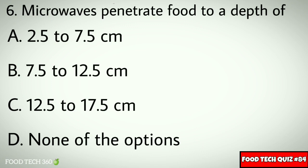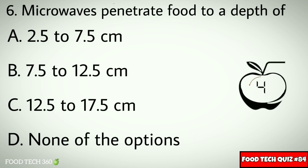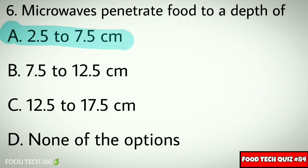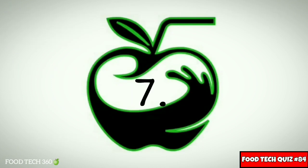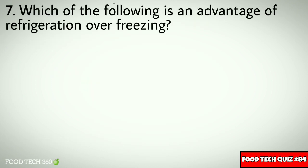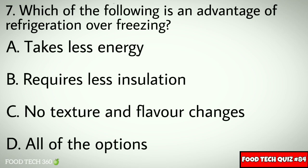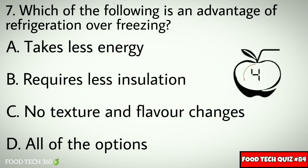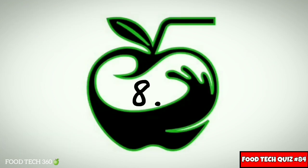Question number 6: Microwaves penetrate food to a depth of — Options: A. 2.5 to 7.5 cm, B. 7.5 to 12.5 cm, C. 12.5 to 17.5 cm, D. None of the options. Question number 7: Which of the following is an advantage of refrigeration or freezing? Options: A. Takes less energy, B. Requires less insulation, C. No texture and flavor changes, D. All of the options. Correct answer: D. All of the options.